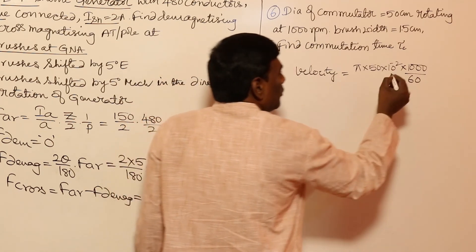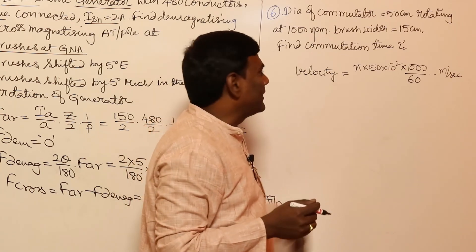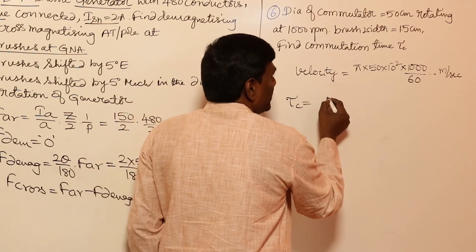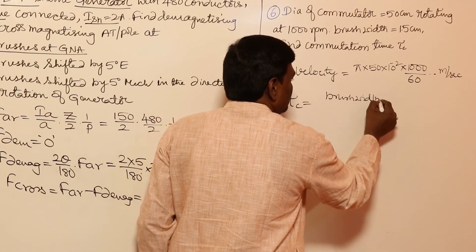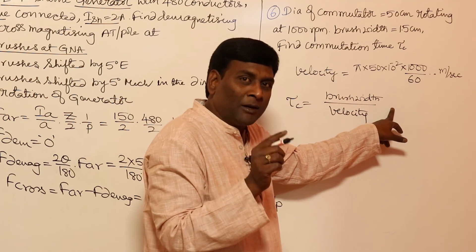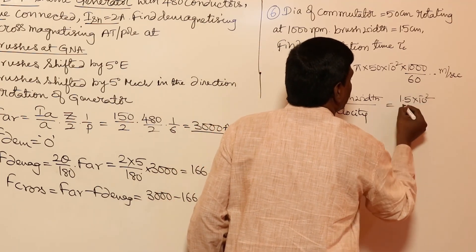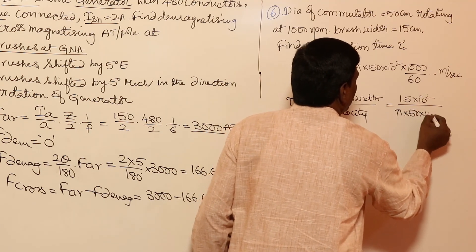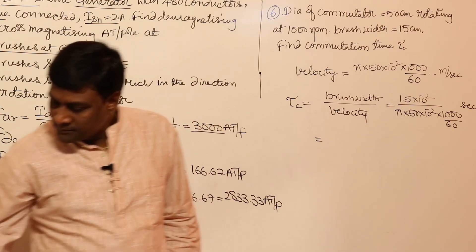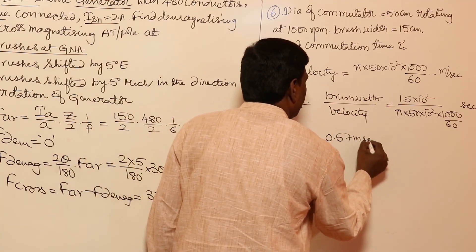Commutation time equals brush width divided by velocity. Brush width is 1.5 centimeters equals 1.5 times 10 to the power minus 2 meters. Velocity equals pi times 50 times 10 to the power minus 2 times 1000 divided by 60. So commutation time equals 1.5 times 10 to the power minus 2 divided by that velocity. Calculating this gives 0.57 milliseconds.